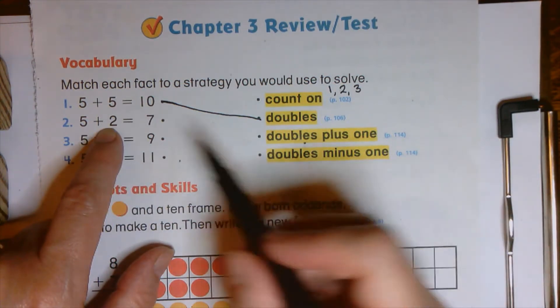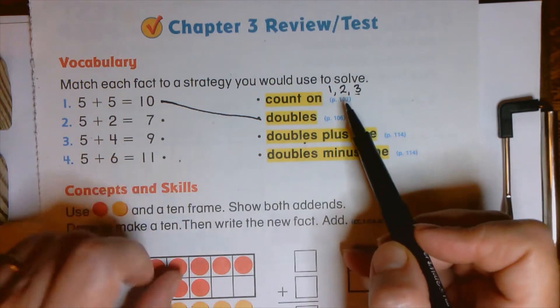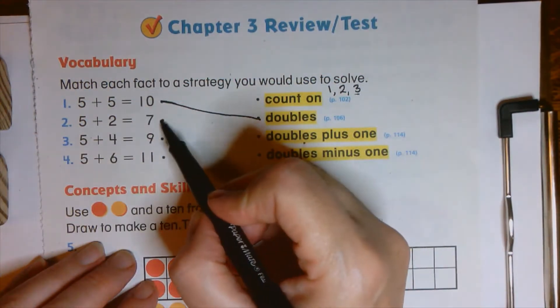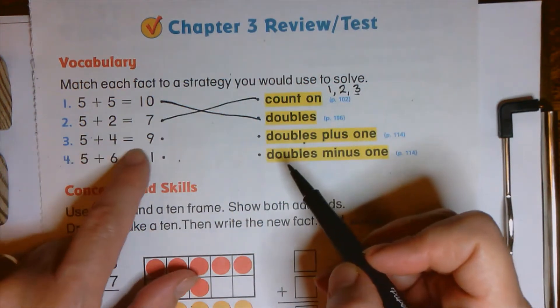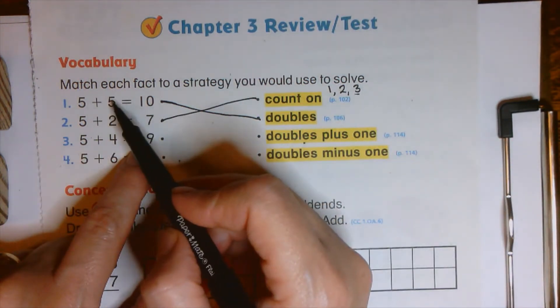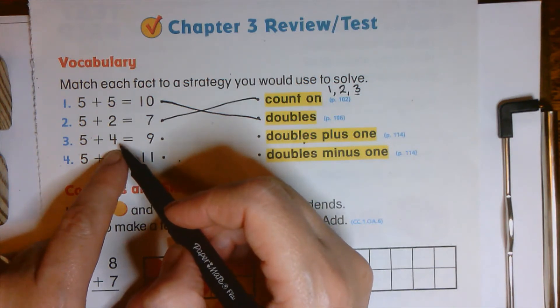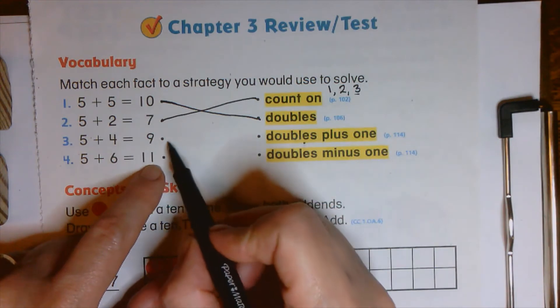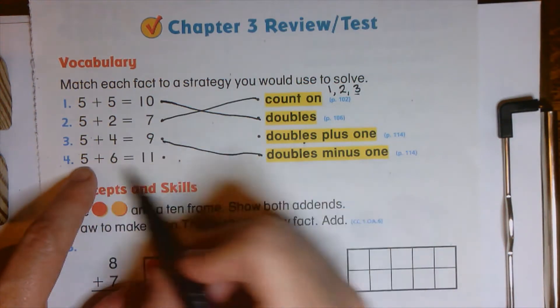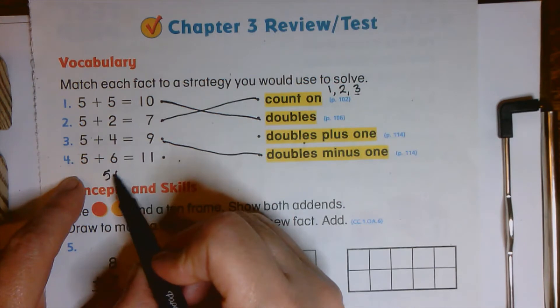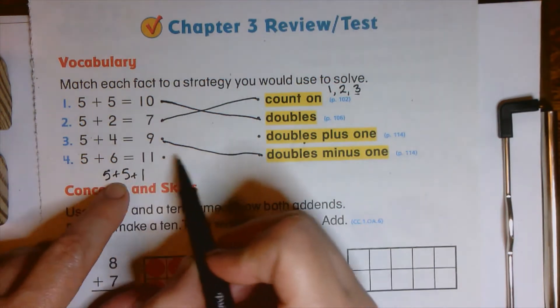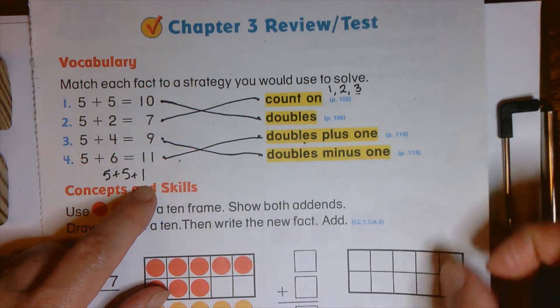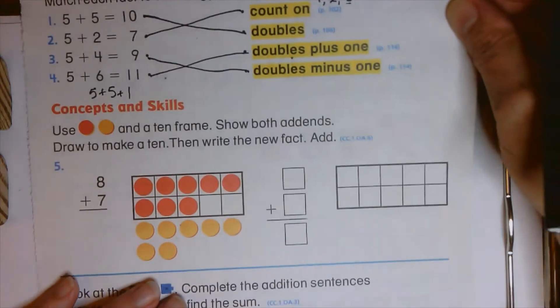So we're going to draw a line connecting those dots. Five plus two. Well, there, that's one of these ones where we count on, right? We say five, six, seven. So that's a counting on fact. Five plus four. Well, here's our doubles, right? Five plus five. Five plus four, we just minused one. We took one off of that, right? And five plus six. Well, that's just like five plus five plus one, right? It's our doubles fact plus one. Doubles plus one. Is your brain remembering doing this stuff?